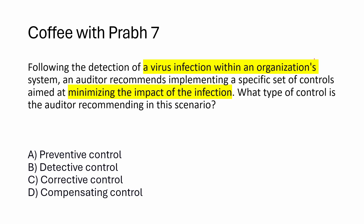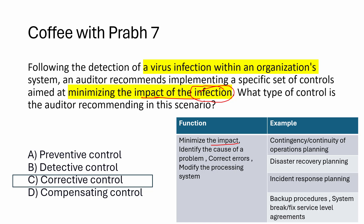Following detection of a virus infection within the organization's systems, the auditor recommends implementing a specific set of controls aimed at minimizing the impact of the infection. A virus infection is already an incident — failure of preventive control (antivirus). Detective control detects it. But the question is about reducing/minimizing the impact. Answer is corrective control. Any question about minimizing impact, correcting the error, modifying the processing system after the incident — answer is corrective control. This includes contingency, BCP, DR, incident response, restoring from backup after ransomware — all corrective control.